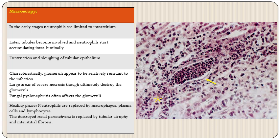If the acute phase heals with proper antibiotic therapy, the neutrophils are replaced by chronic inflammatory cells like macrophages, plasma cells, and lymphocytes, and the destroyed renal parenchyma is replaced by tubular atrophy and interstitial fibrosis — these are permanent scars of healed acute pyelonephritis. The light microscopic picture shows neutrophils in the interstitium and collections of neutrophils in the lumen of tubules.